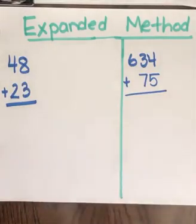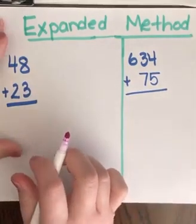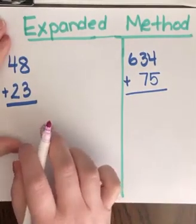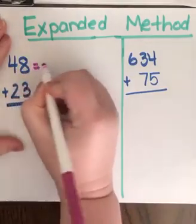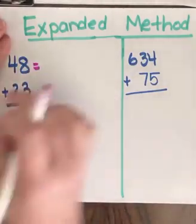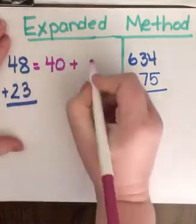So for expanded method, we look at our numbers and we're going to show the value of the place that each number is in. So 48, if you listen closely, you kind of hear it. 40, so we're going to write down 40, and then 8.